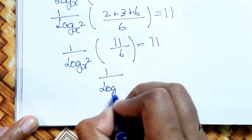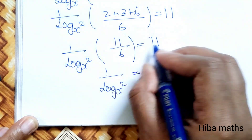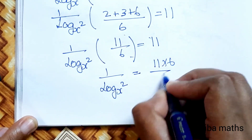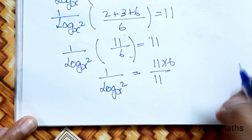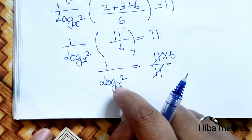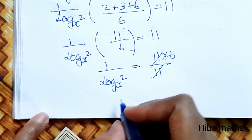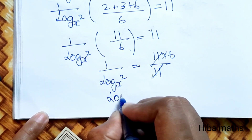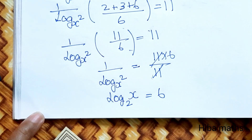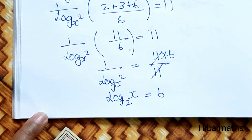Putting the left side: 1 by log base x of 2 equals 11 over 6. Simplifying, log base x of 2 equals 6 over 11. Now putting the right side, we get log base x of 2 equals 6.